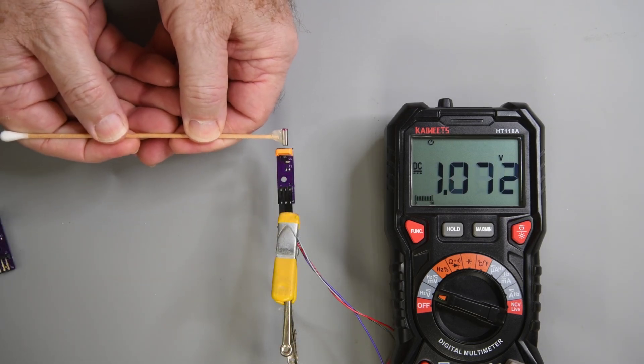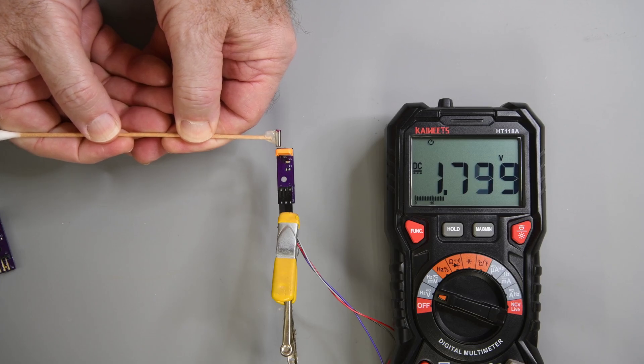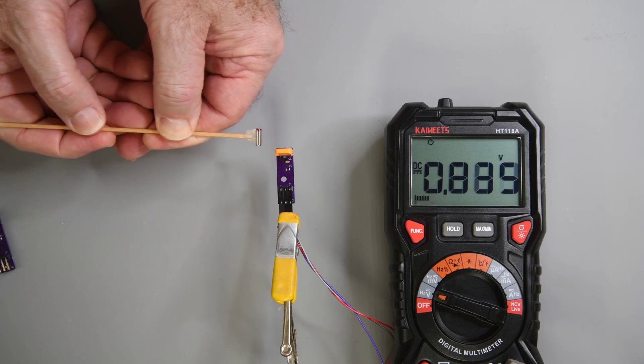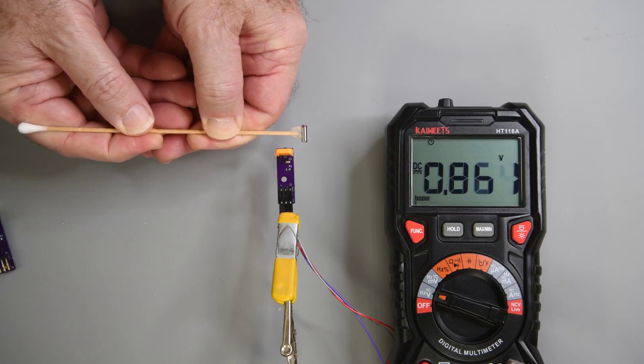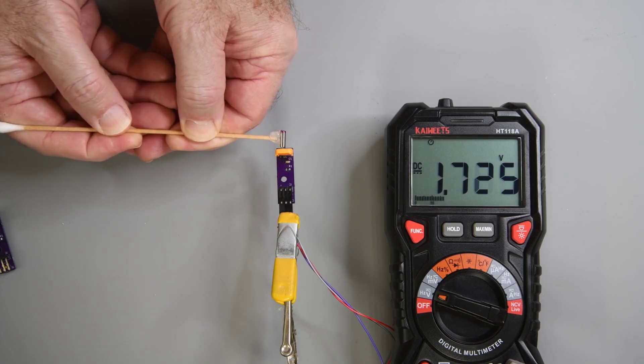Now with the Hall sensor. With the south pole at the center of the sensor I get full output. And the voltage drops as the magnet is moved away. It doesn't matter which side it's moved to.